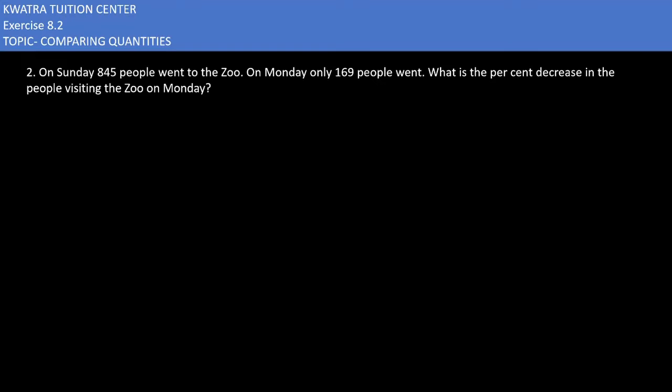Let's start with question number 2. Here it says on Sunday 845 people went to the zoo. So how many people went on Sunday? The number of people who visited on Sunday are 845. On Monday it is only 169.